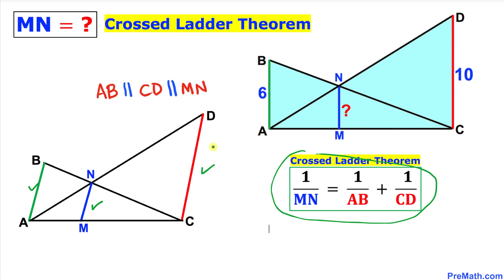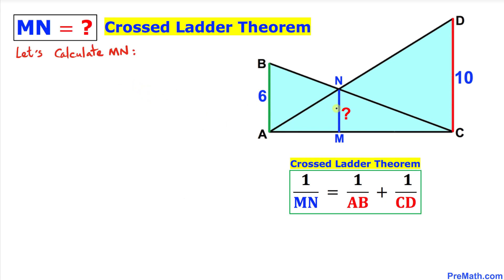Now let's go ahead and calculate the length of this line segment MN. As we know, our AB is 6 and CD is 10. Here's our Crossed Ladder Theorem. Let's go ahead and fill in the blanks. We want to calculate MN, so I'm going to write down 1 over MN equal to—AB in our case is 6—so I'm going to write down 1 over 6 plus 1 over this CD, in our case is 10 units.